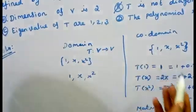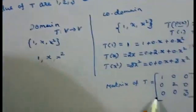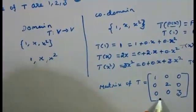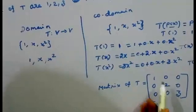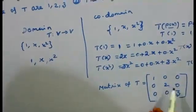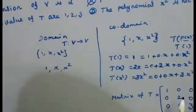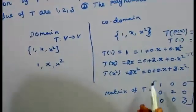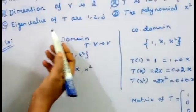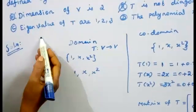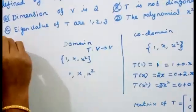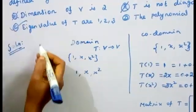Since the matrix is a diagonal matrix, the diagonal entries are the eigenvalues. The diagonal entries are 1, 2, and 3. Therefore the eigenvalues of T are 1, 2, 3. The third option — eigenvalues of T are 1, 2, 3 — is correct.